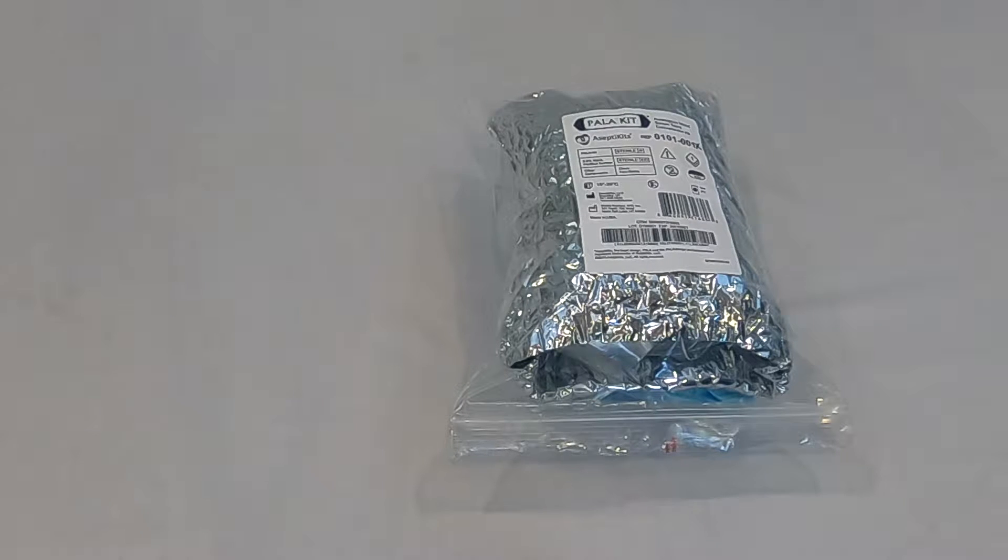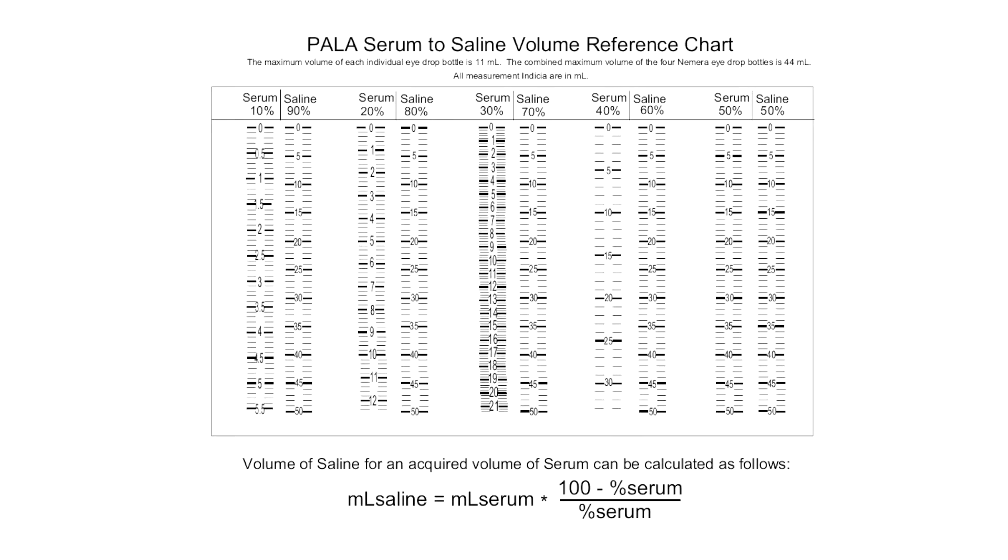Centrifuge all blood collection tubes per institutional protocols. Review the dosing chart to determine the correct volume of saline and blood serum to be mixed. The total volume of the four eyedrop bottles is 44 milliliters.